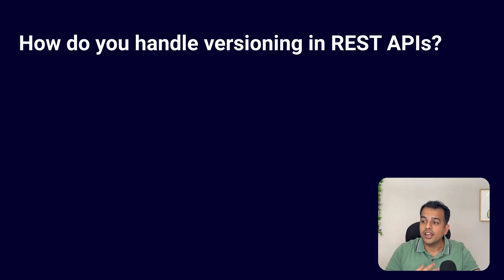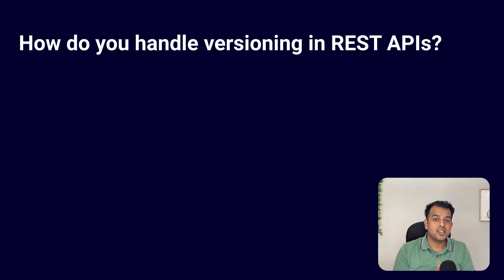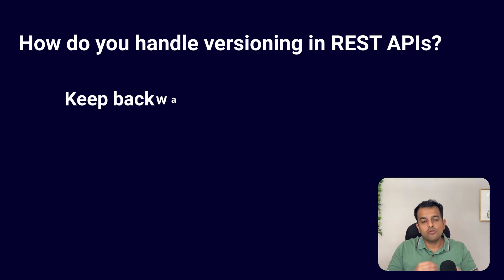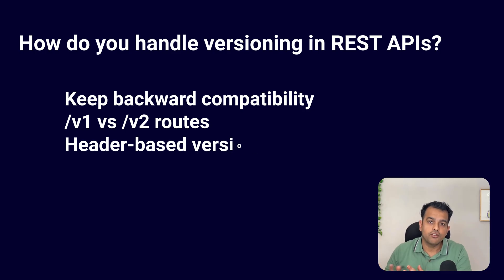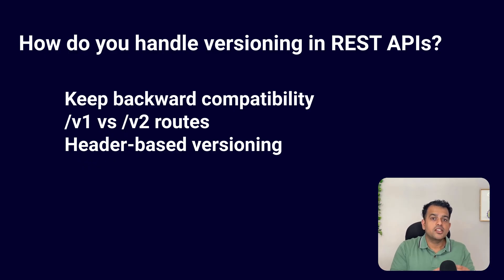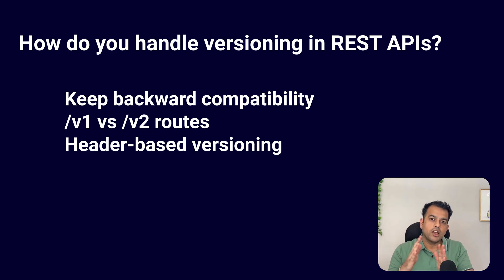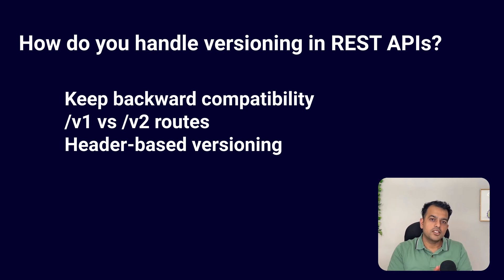The interviewer moved to a practical real-world scenario question: how do you handle versioning in REST APIs? We never change an existing API response directly. Instead, we create versioned endpoints like v1, v2, v3. This keeps backward compatibility for older clients. If you want to add a new feature, you can create a new version without affecting the older one. Versioning helps release new features without breaking existing consumers. If one version has a failure, other versions remain available for consumers.